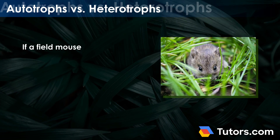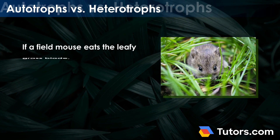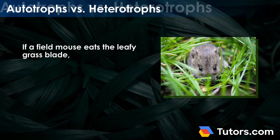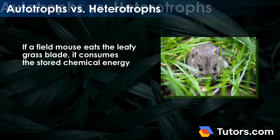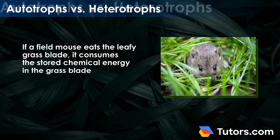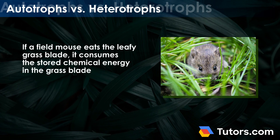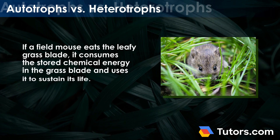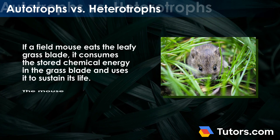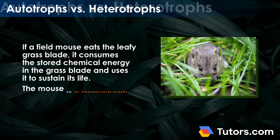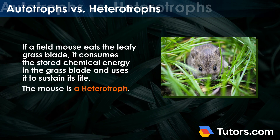If a field mouse eats the leafy grass blade, it consumes the stored chemical energy in the grass blade and uses it to sustain its life. The mouse is a heterotroph.